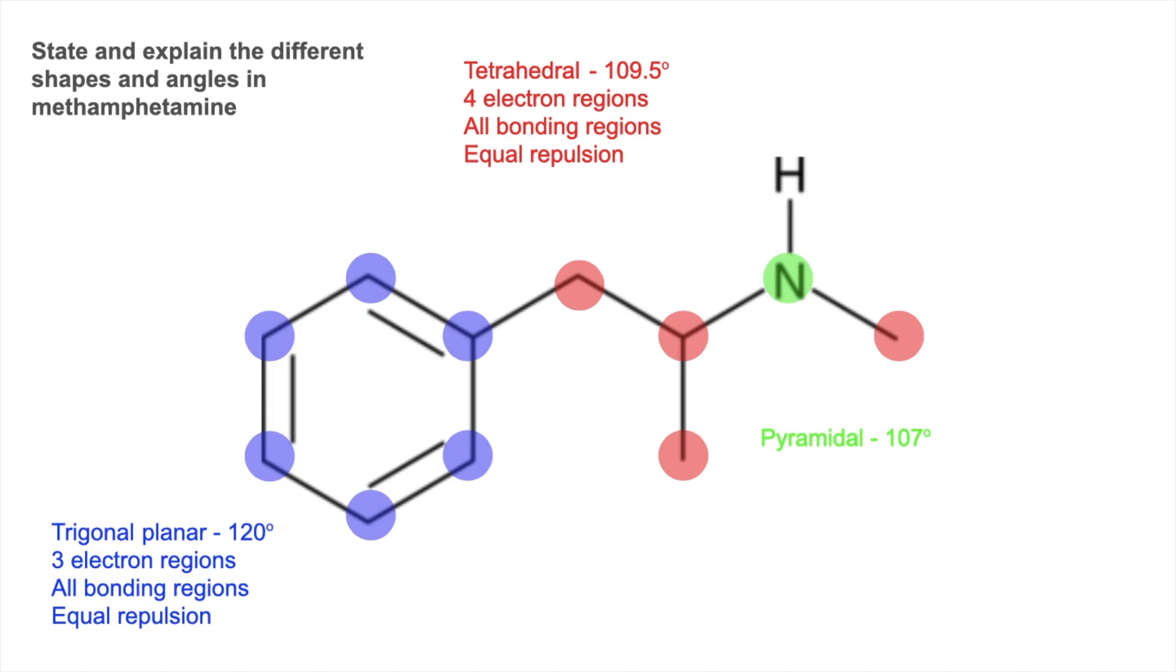So what's the reason for that? We've got four electron regions. You can only see three bonds there. But remember, nitrogen's in group five. So there's a lone pair on there.